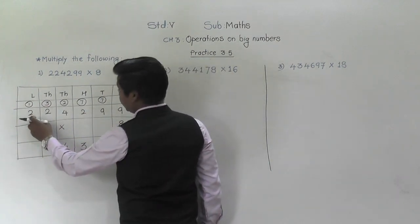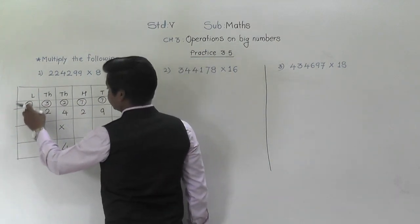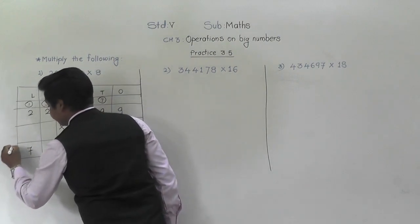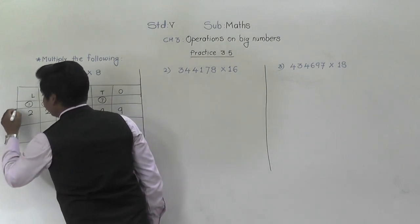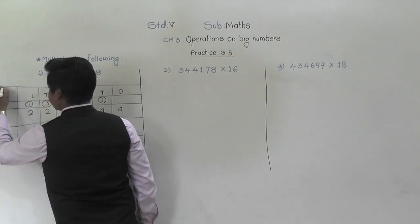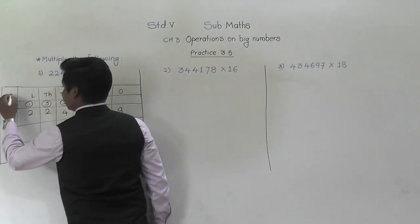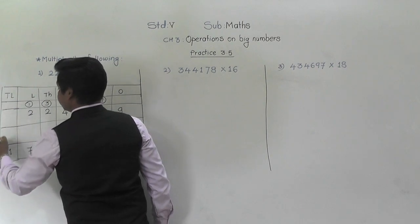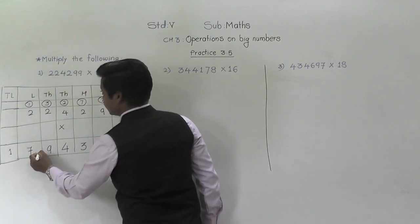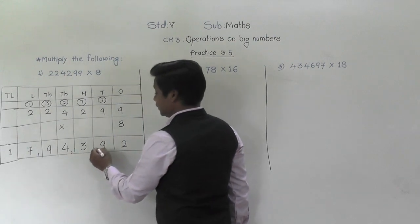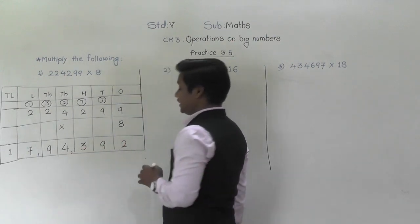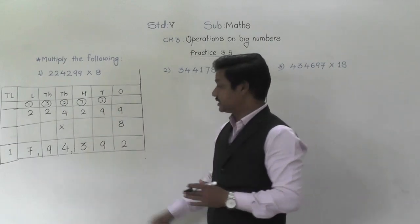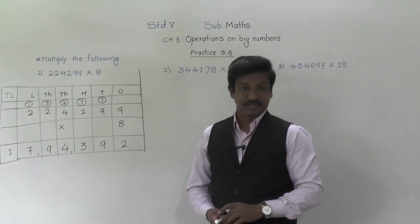Now, 8 twos are 16 plus 1 is 17. So here write 7 and here write 1. If you need, you can increase the boxes — 10 lakh. So the answer is 17,94,392. This is our answer. And the answer in multiplication is called nothing but the product.